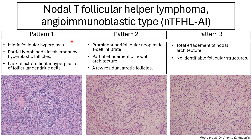AITL can be broken down into three different patterns. Pattern one is very mild and mimics reactive follicular hyperplasia, with partial lymph node involvement by hyperplastic follicles and no expansion of the follicular dendritic cell meshwork on CD21 stain. Pattern two shows prominent perifollicular neoplastic T cell infiltrate with partial effacement of lymph node architecture and some atracted follicles. Pattern three shows total effacement of lymph node architecture with abundant high endothelial venules and no residual follicles.